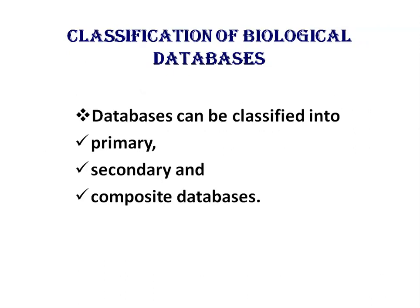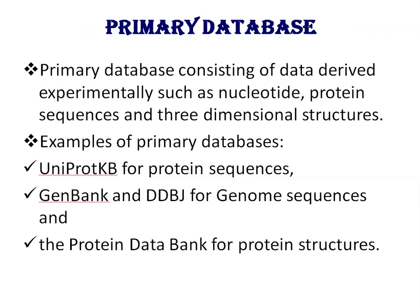Classification of biological databases: databases can be classified into three types — primary databases, secondary databases, and composite databases. Primary databases consist of data derived experimentally, such as nucleotide sequences, protein sequences, and three-dimensional structures. Examples of primary databases are UniProtKB for protein sequences, GenBank and DDBJ for genome sequences, and the Protein Data Bank for protein structures.